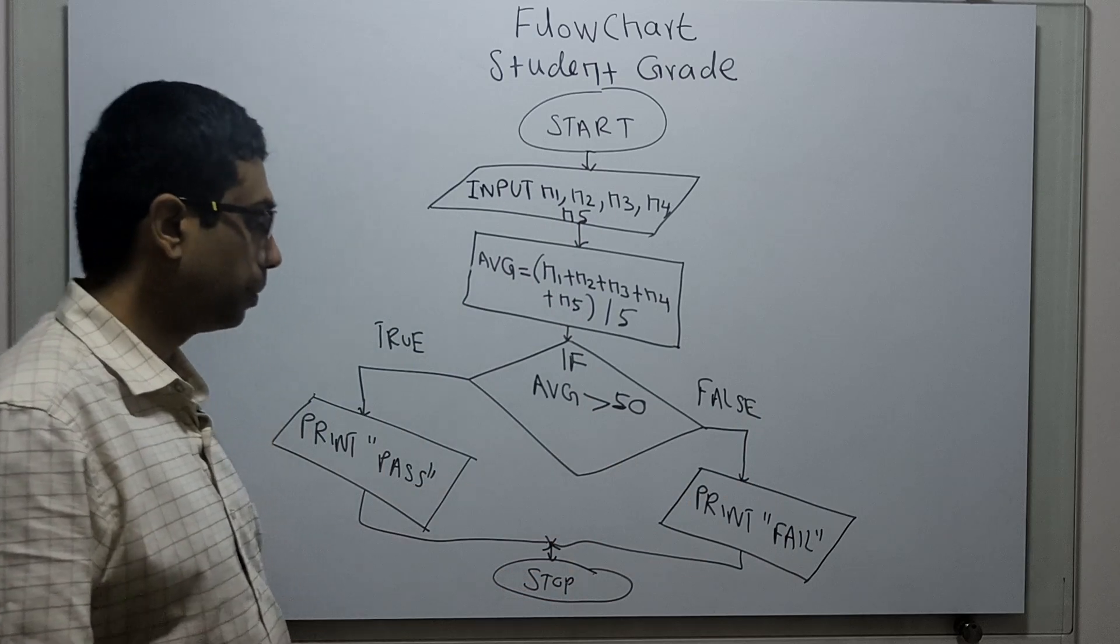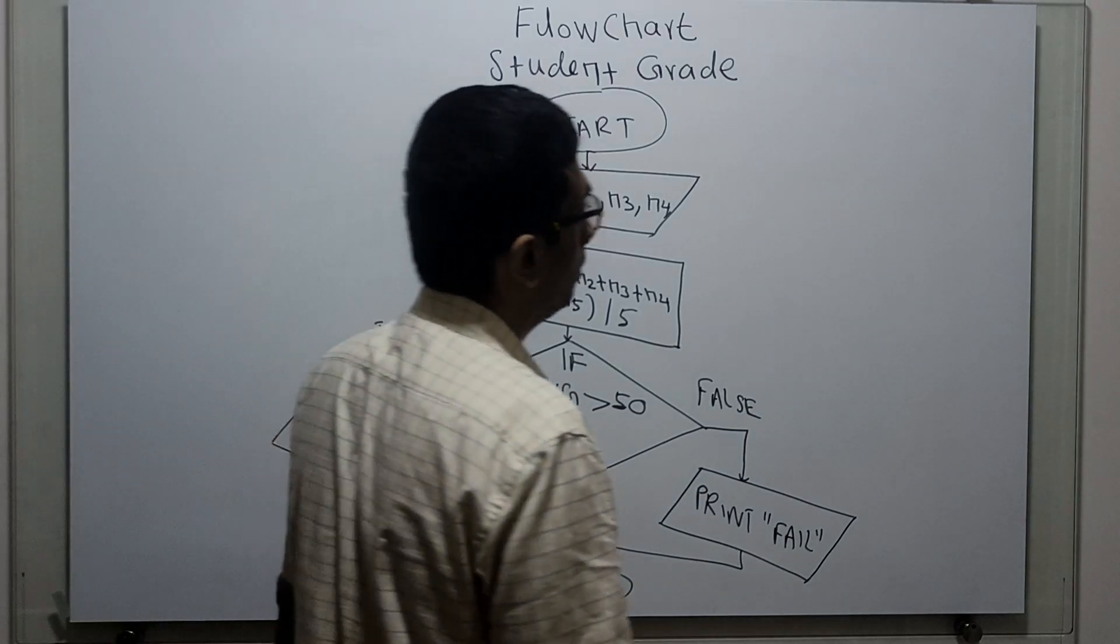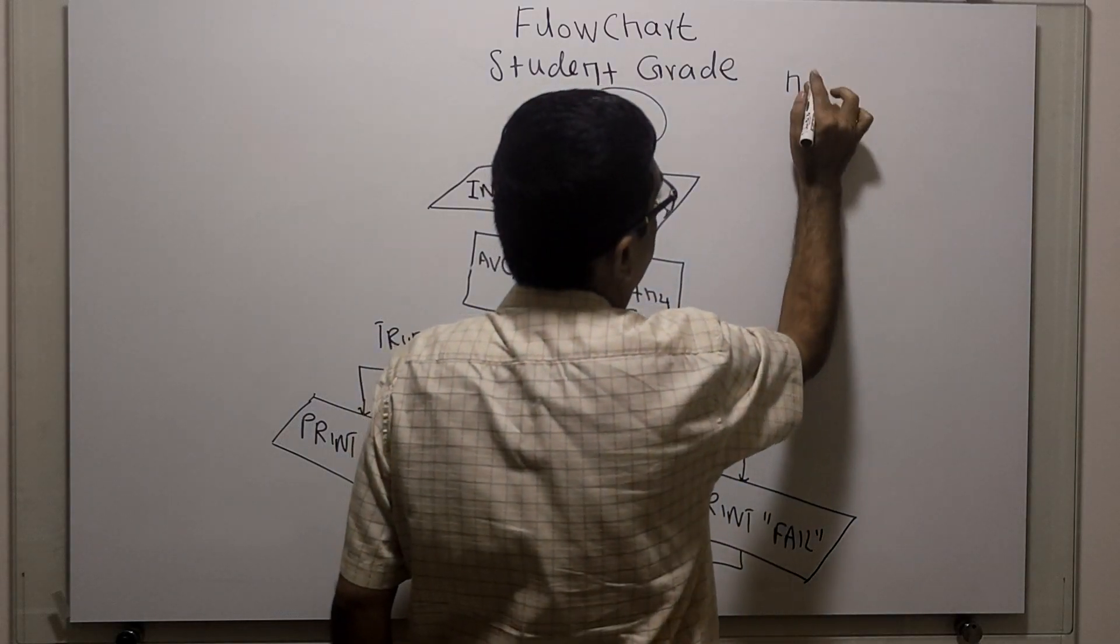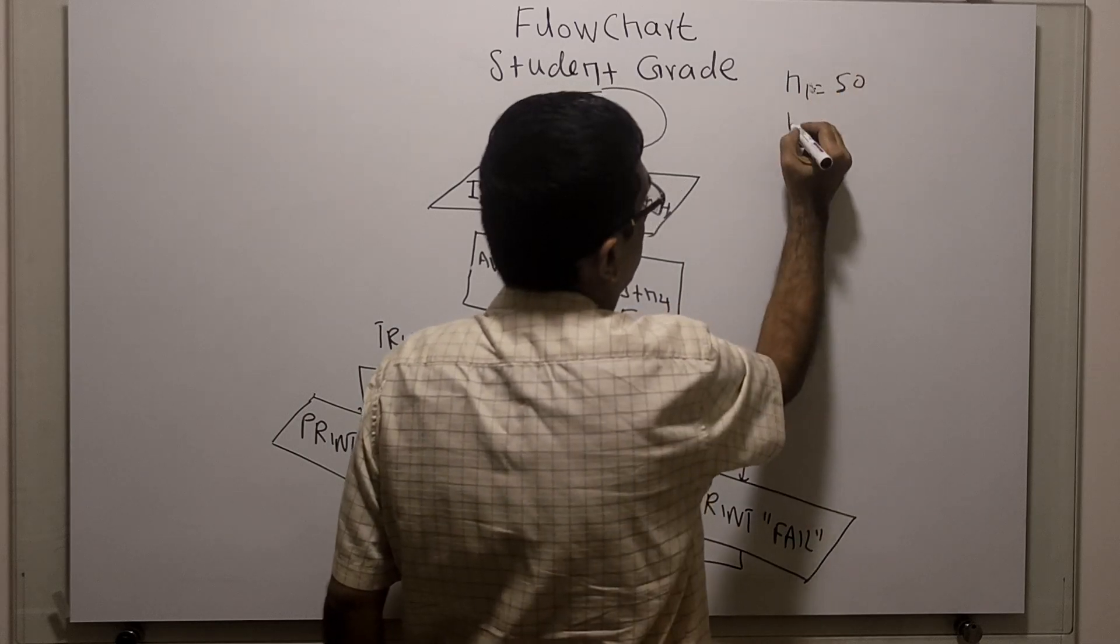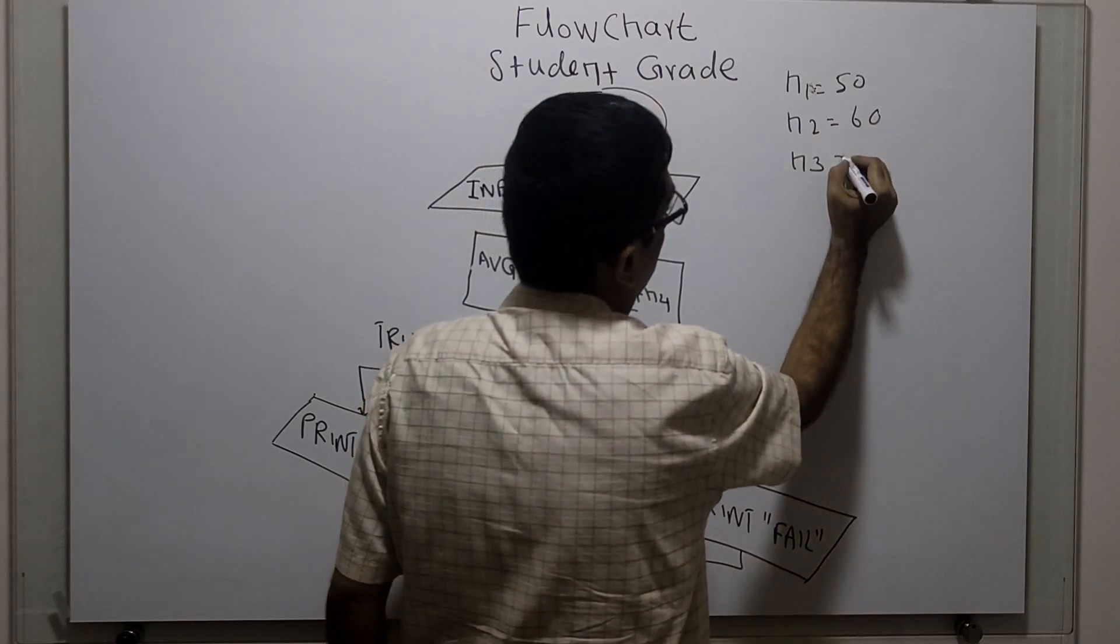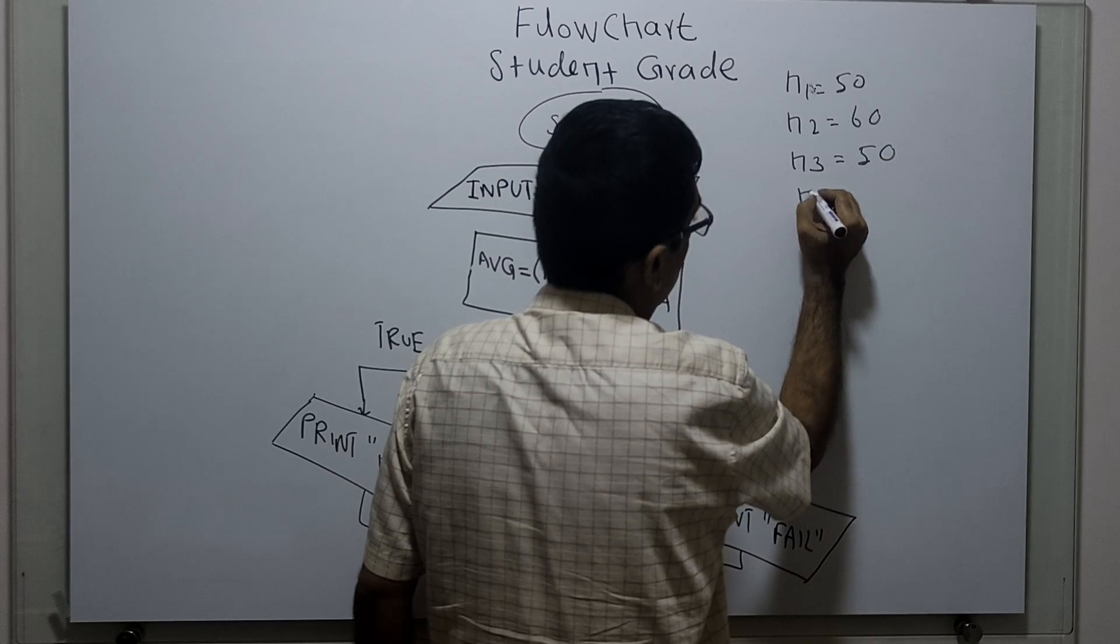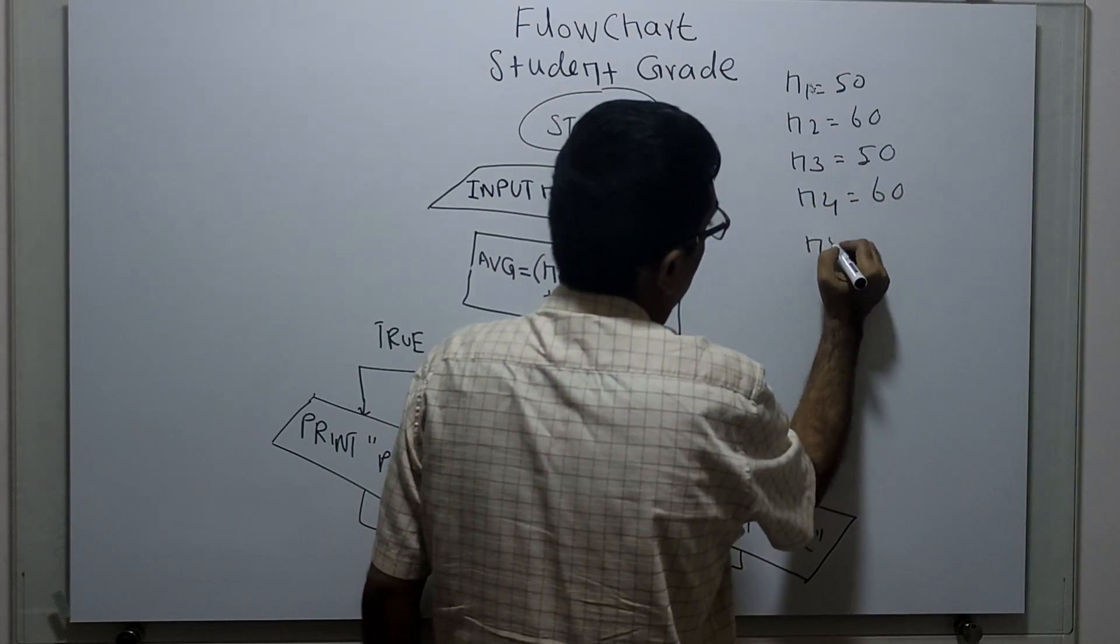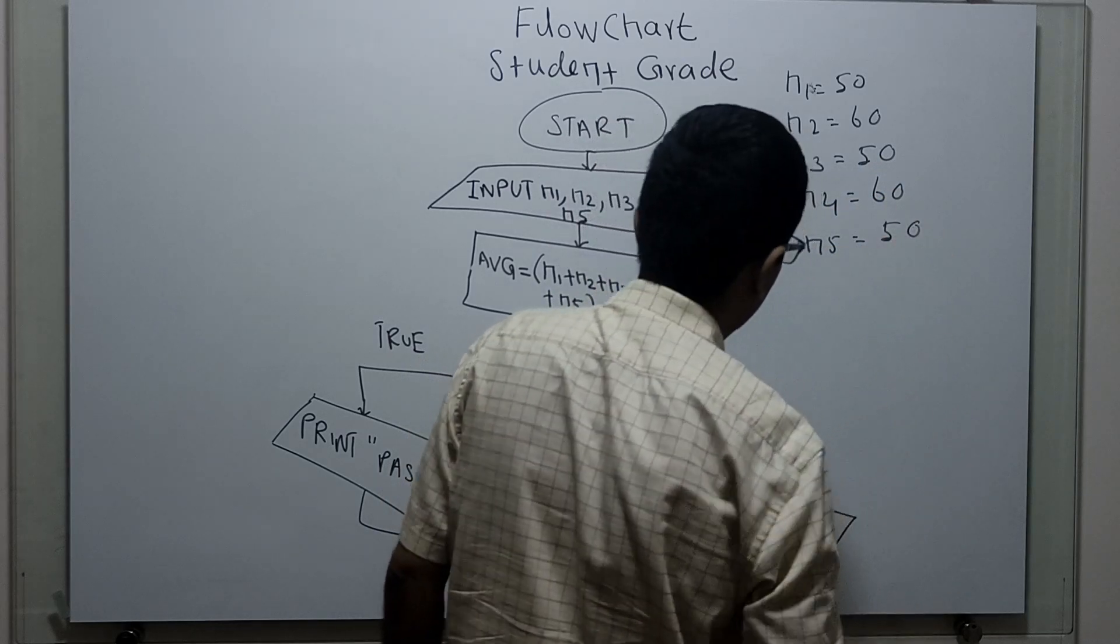We will take a sample input and check how this flowchart works. So I'm getting marks: n1 equals 50, n2 equals 60, n3 equals 50, n4 equals 60, n5 equals 50.